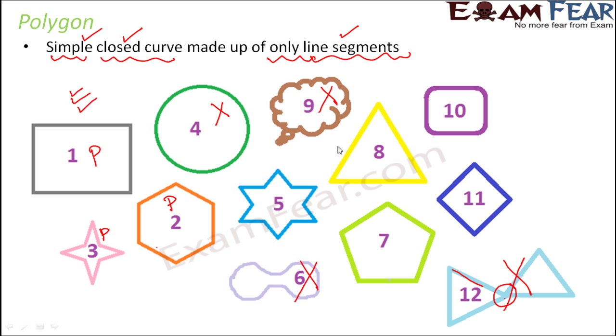So in this way, I am sure that you will be able to identify which one is a polygon and which one is not. In fact, all the others are polygons. So these are all polygons because they are simple closed curves made up of only line segments.